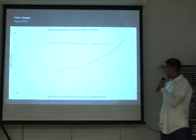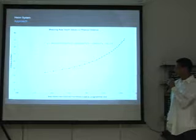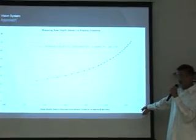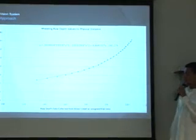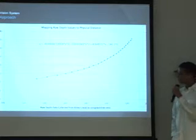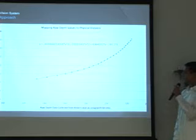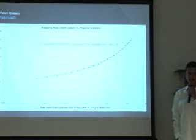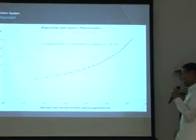This is the data we collected in increments of four inches away. The x-axis is the raw data — the integers the Kinect reported — and the y-axis is the physical distances we manually measured with a tape measure. We plotted this and got a cubic polynomial from this data. It pretty accurately maps any raw data we collect to physical distance.